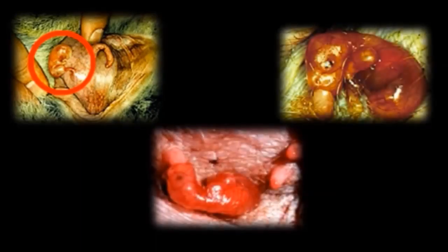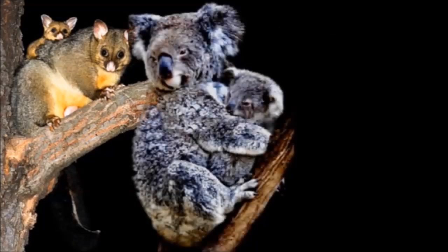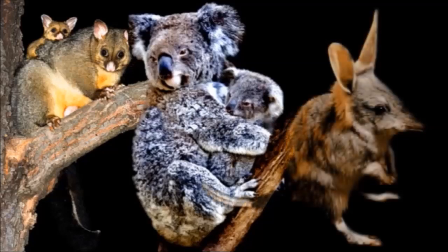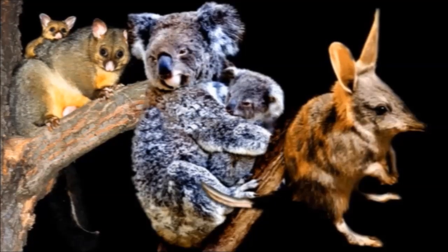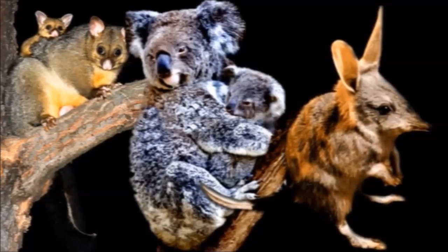Although they have no need to hack through a hard eggshell, several marsupial newborns such as the baby brushtail possum, koalas, and bandicoots retain a vestigial caruncle as a clear indicator of their reptilian egg-laying ancestry.